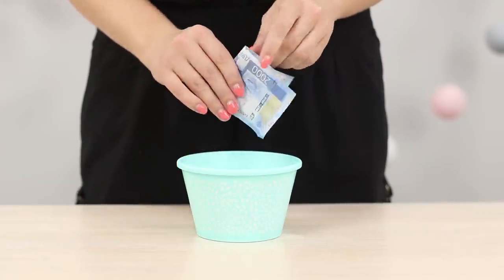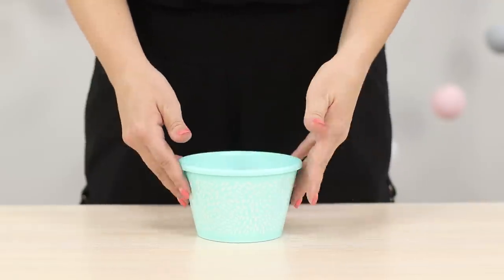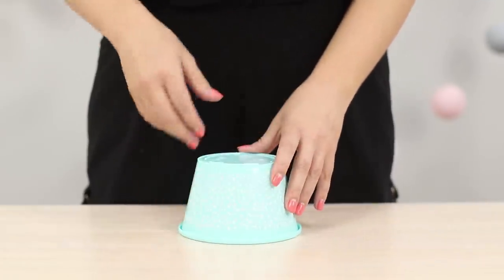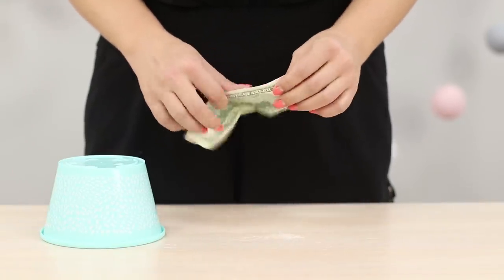Make a magic currency exchanger right at home! Put a regular bill in a pot. Turn around and start to conjure. Raise the pot! There are real dollars under it! Isn't it surprising?